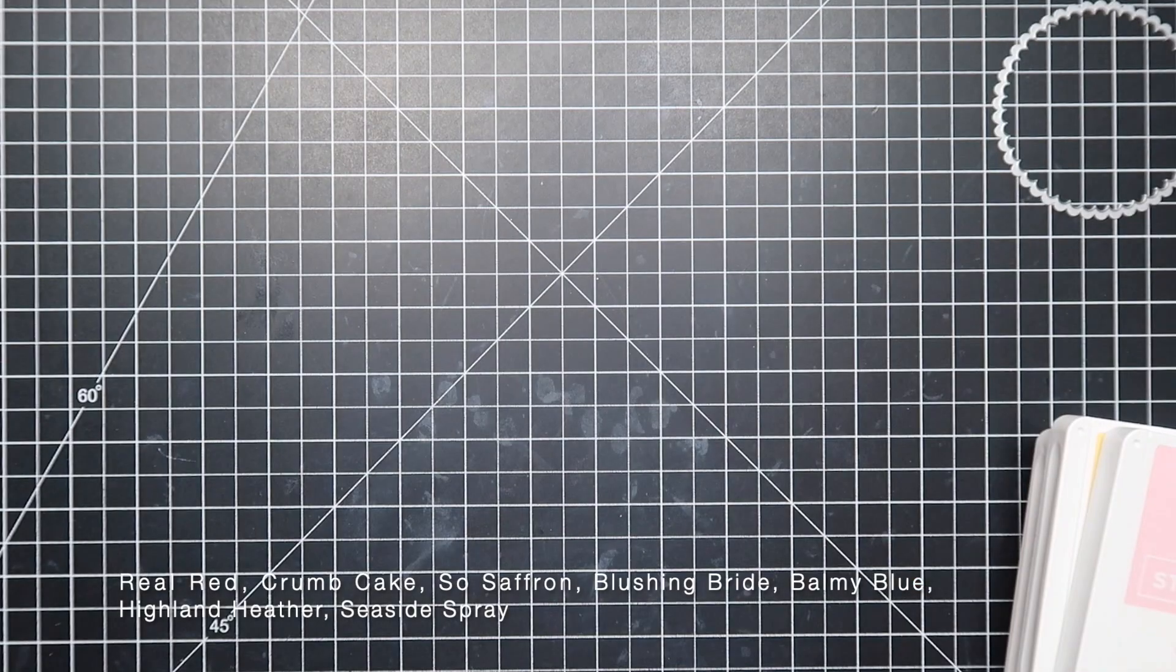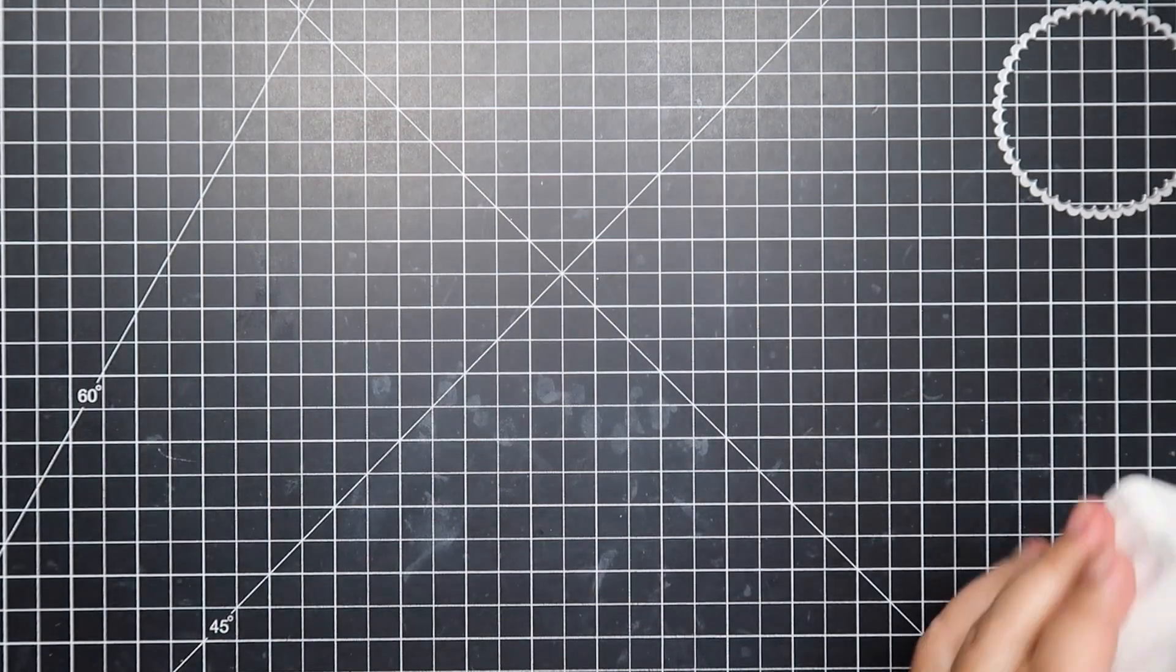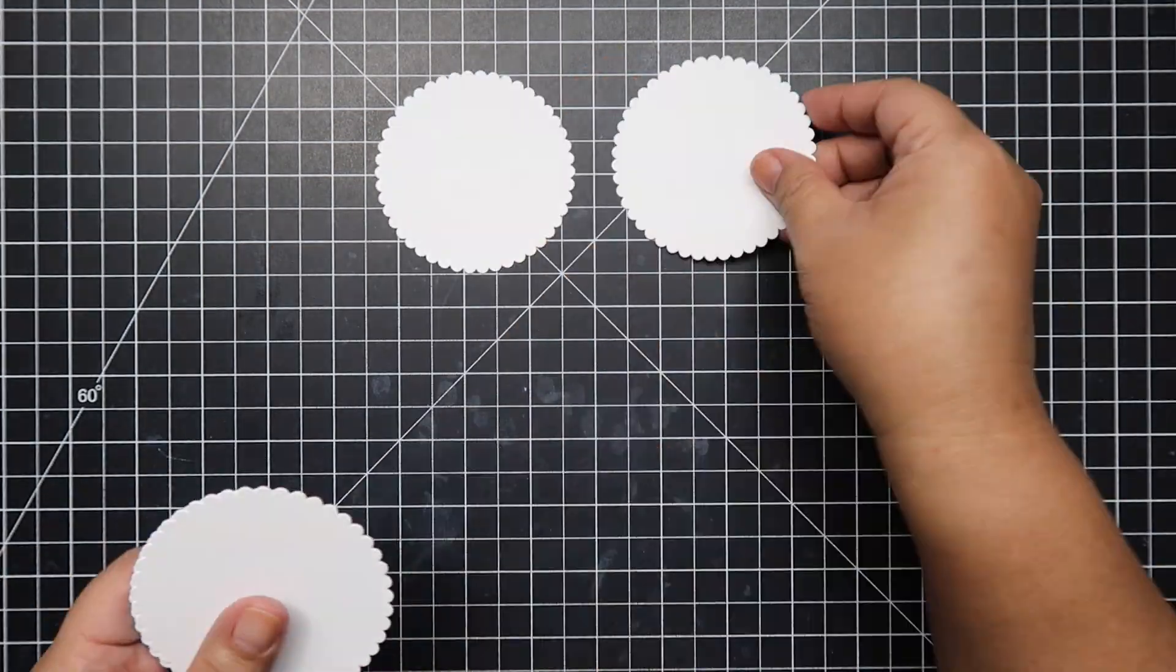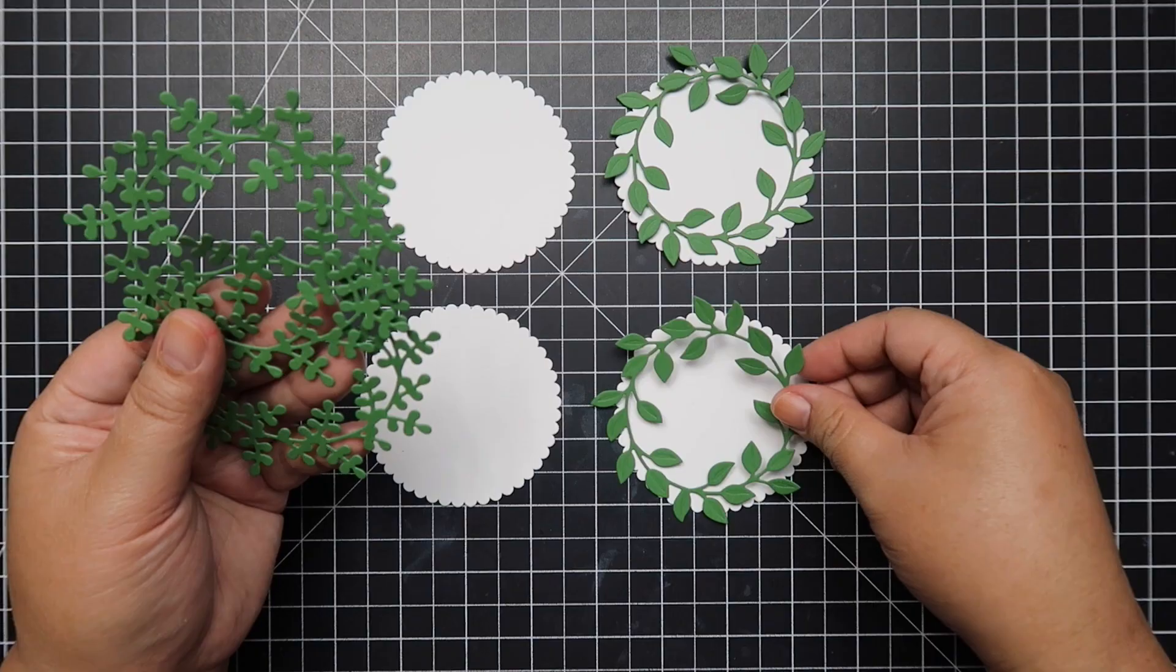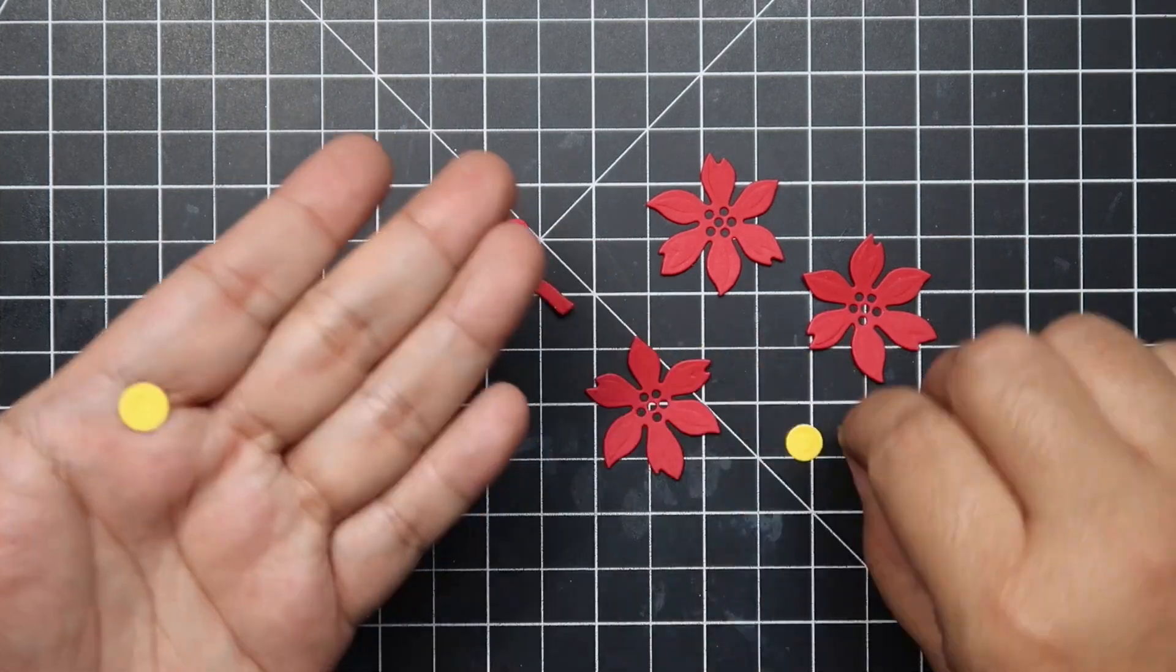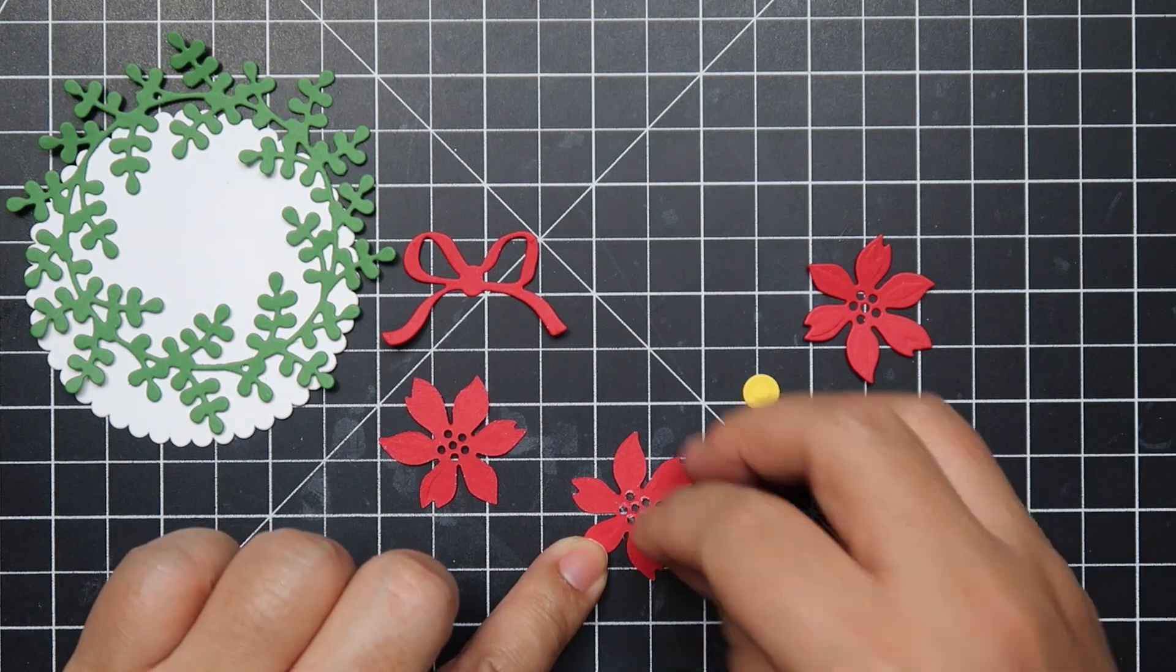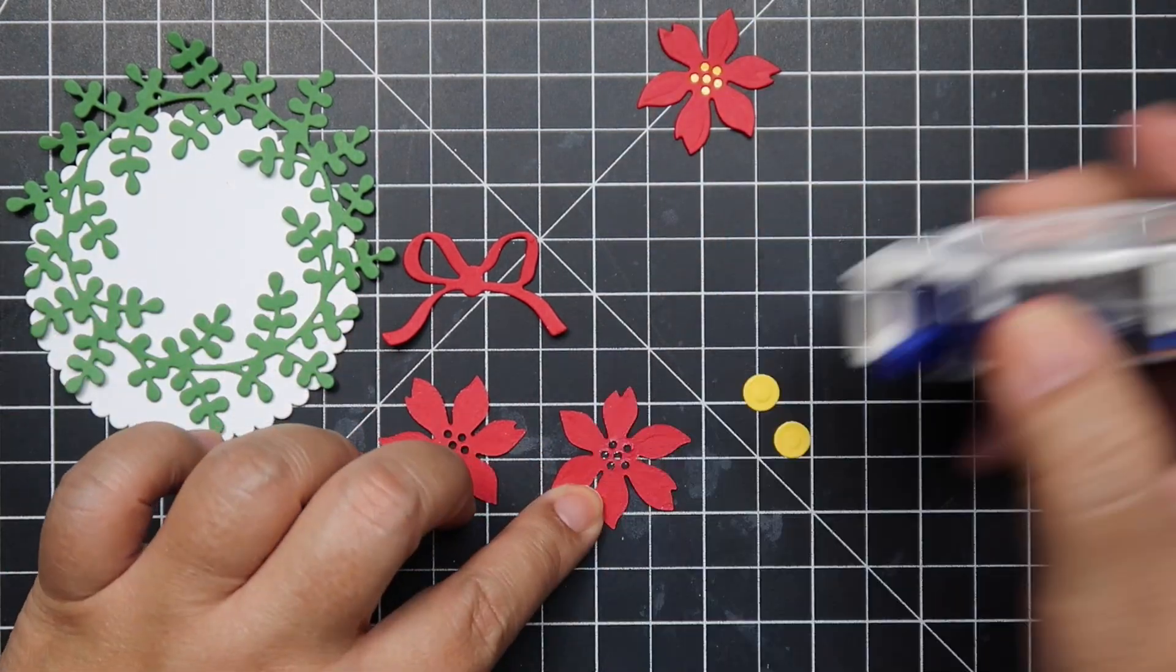I will also have them all linked below. We decided we were going to make four tags and the four tags I decided to make are Christmas, Easter, a wedding one because it says best wishes, and a Valentine's. So here's the first card.